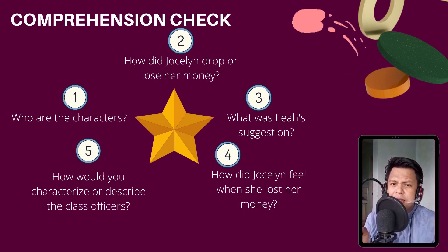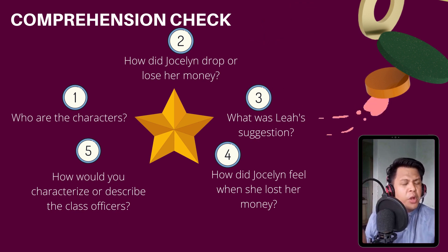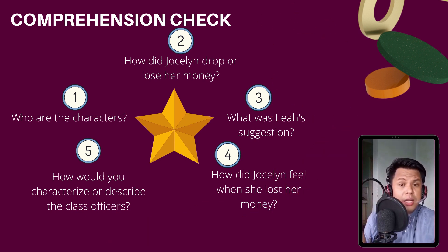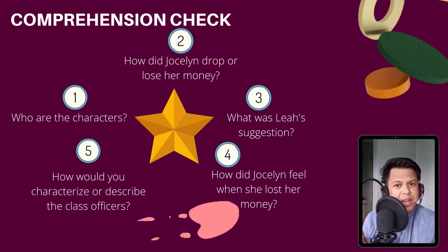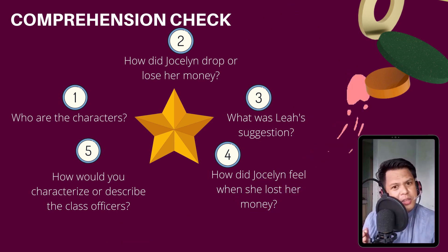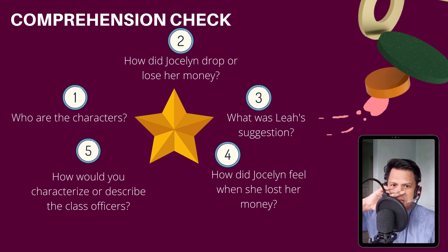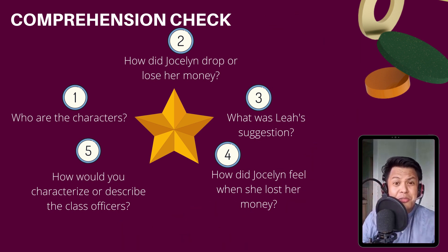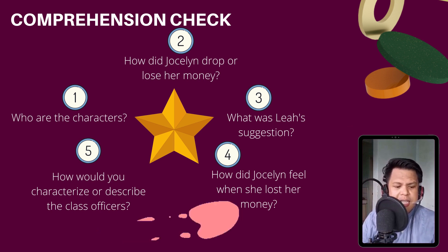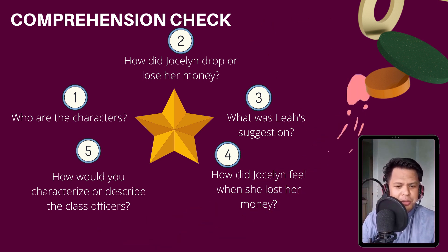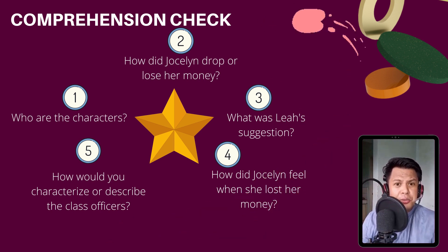Now, we need to unfold or comprehend the important message of the text. The first question is: who are the characters of the story? Can you identify? The characters are Leah, Jocelyn, and the class officers.